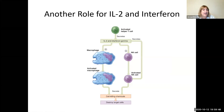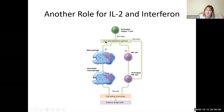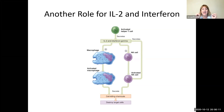Let me tell you about another role for interleukin-2 that we haven't talked about. When we have that activated helper T cell, it secretes interleukin-2, which — in addition to its effects on B cells and T cells — also acts on macrophages, making them become activated so they can release chemicals to create a killing effect on nearby cells.